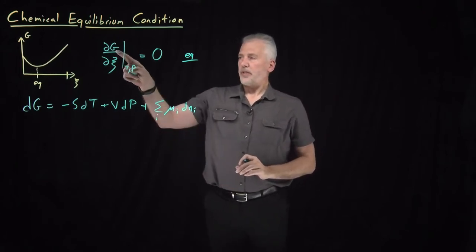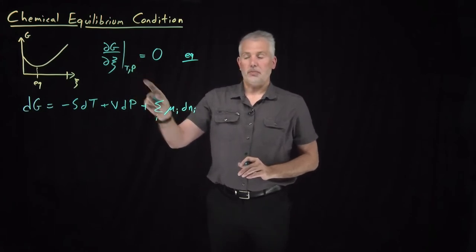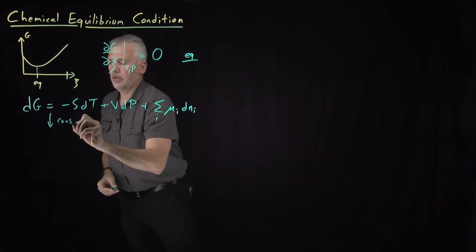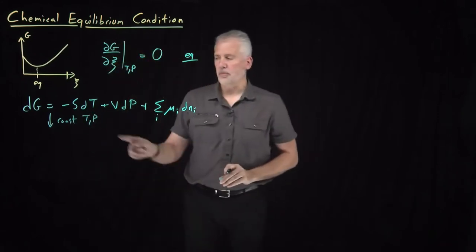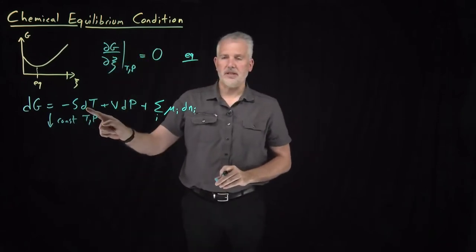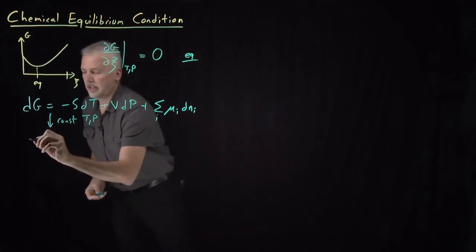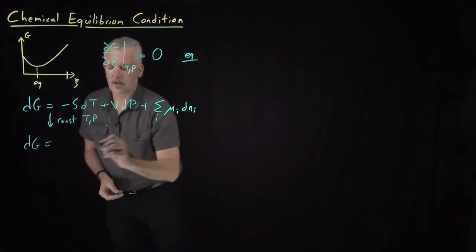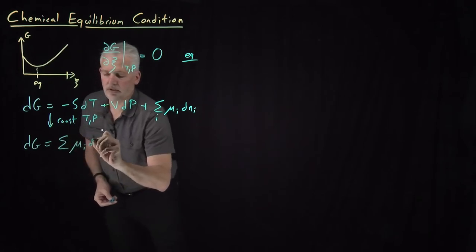We've specifically talked about the change in the free energy at constant temperature and pressure, so that simplifies this equation a bit. When I'm at constant temperature and pressure, dT is equal to zero, dP is equal to zero, and I can say that dG is equal to just the chemical potential term — the sum of the chemical potentials times the change in number of moles.